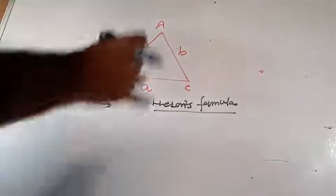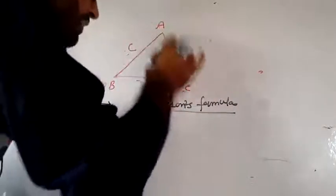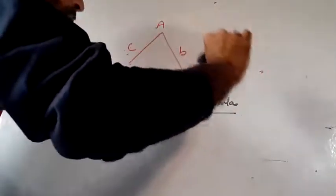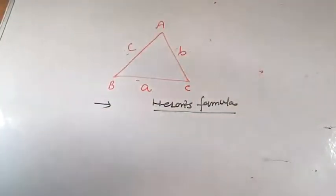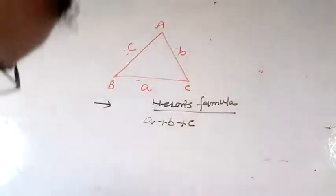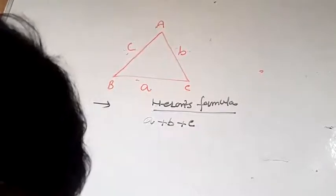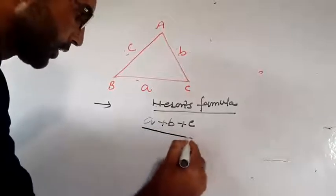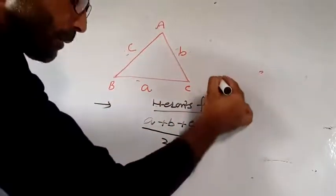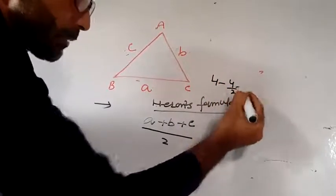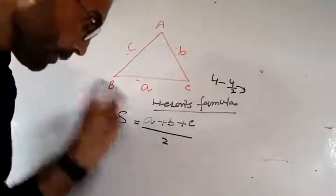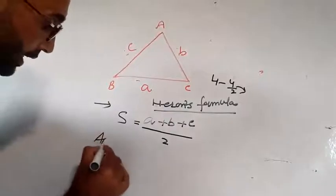To find the area of a scalene triangle when all sides are given, we use Heron's formula. First, calculate the semi-perimeter: s equals a plus b plus c divided by 2. The semi-perimeter is represented by s.